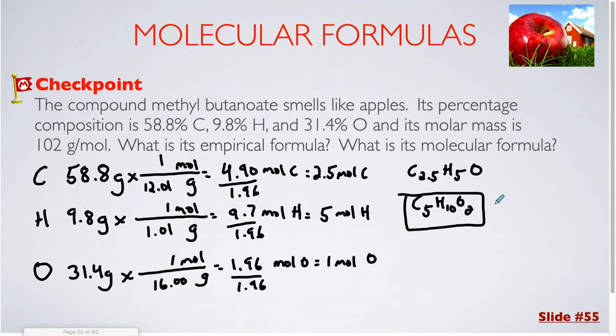So what I've just determined is the empirical formula, which is just the first step in what I'm trying to do here. The next thing I need to do is determine the total mass of the empirical formula. The mass if you were to add up 5 carbons, 10 hydrogens, and 2 oxygens is 102.15 grams per mole.